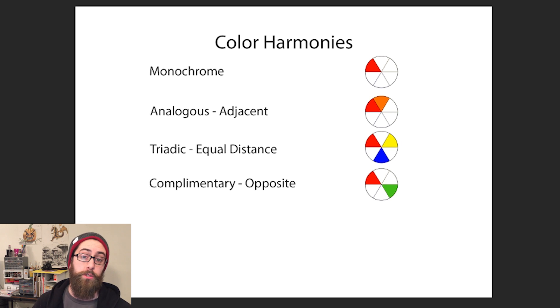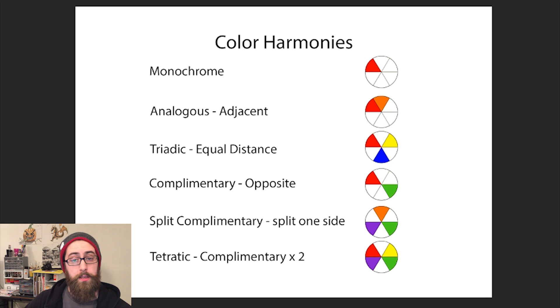Complementary colors would be ones on the exact opposite side of the wheel from each other. Split complementary, similar, however one side would be split to the colors on either side of that complementary color. Tetratic would be two sets of complementary colors that you would use in one final piece.